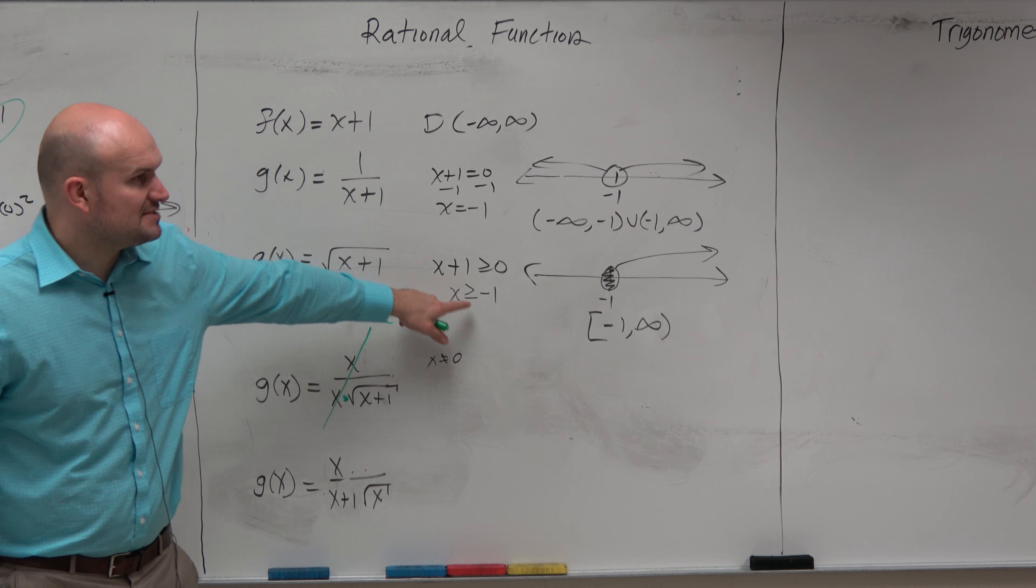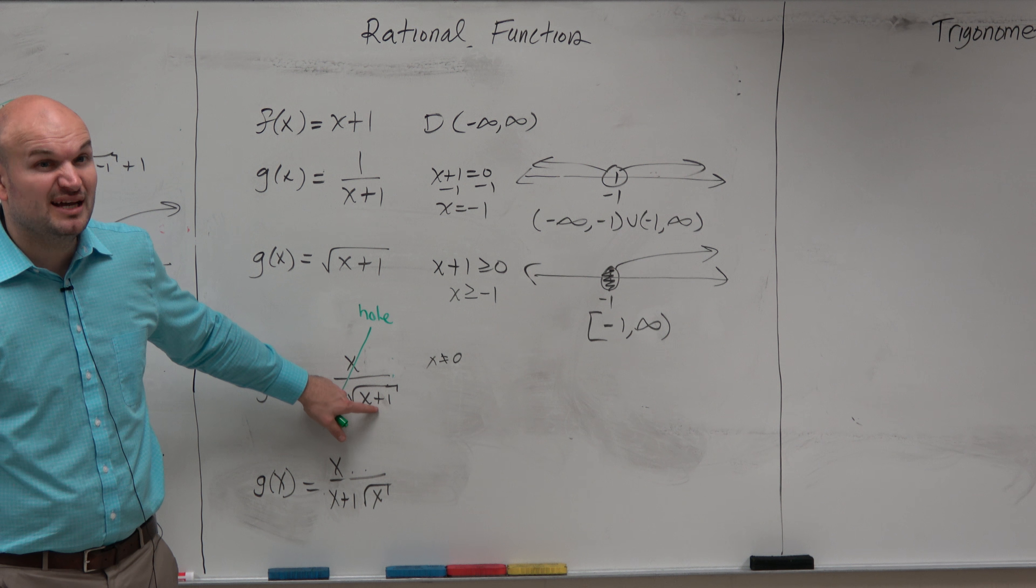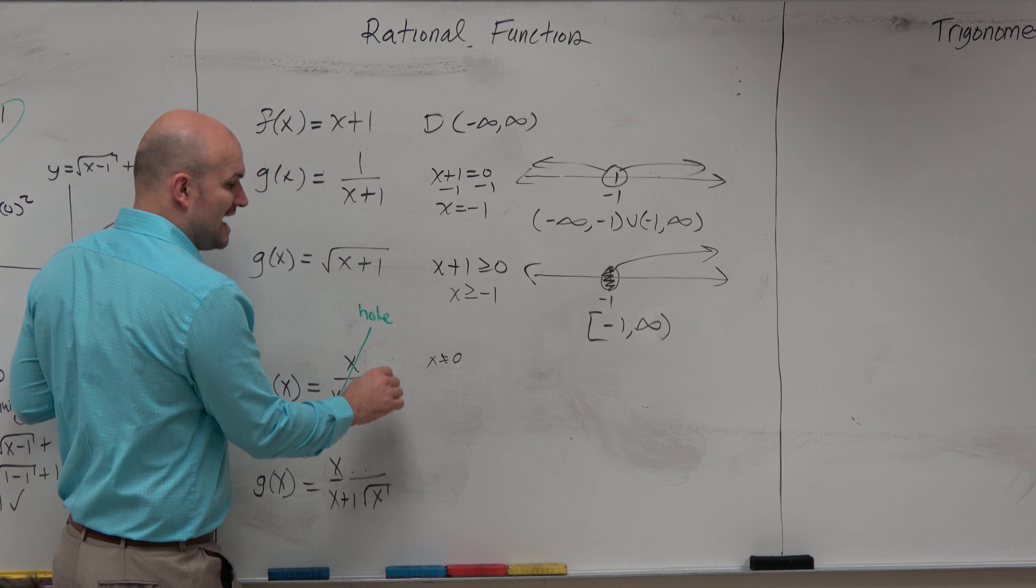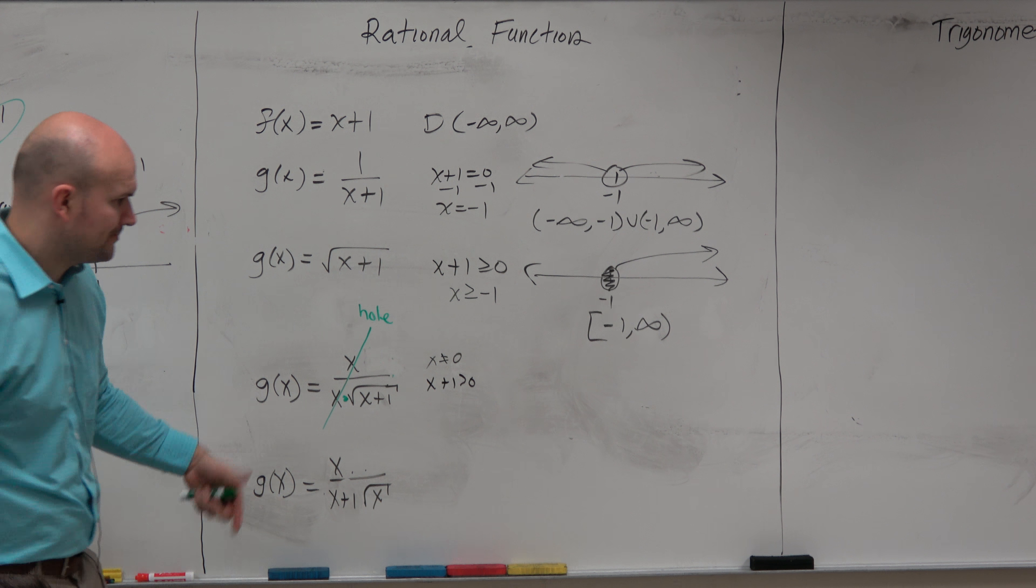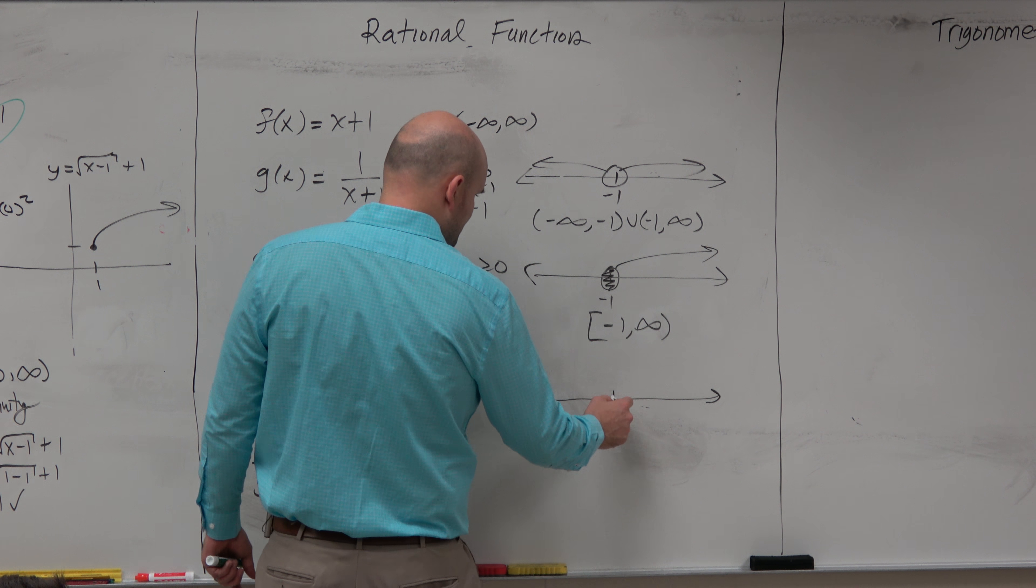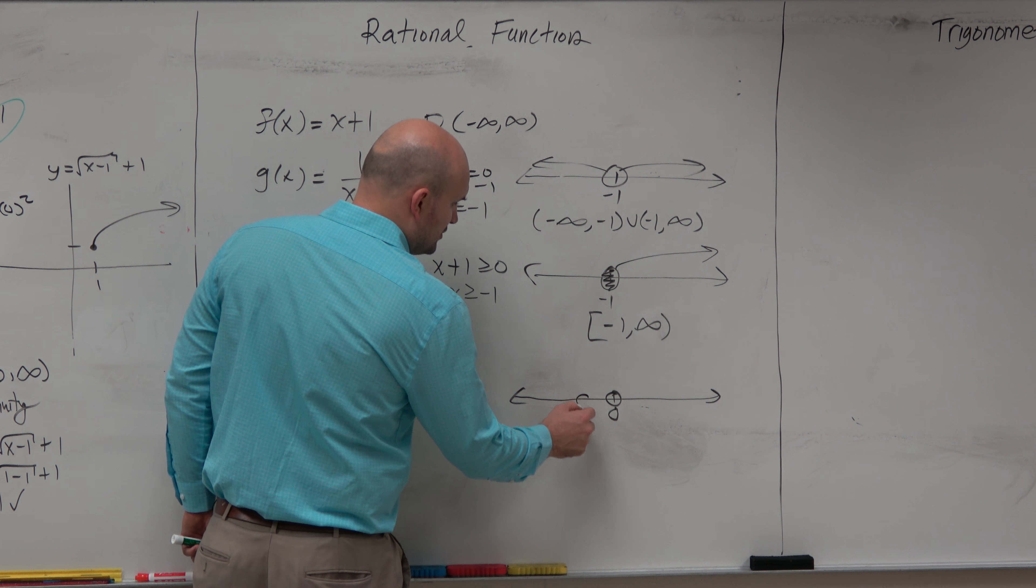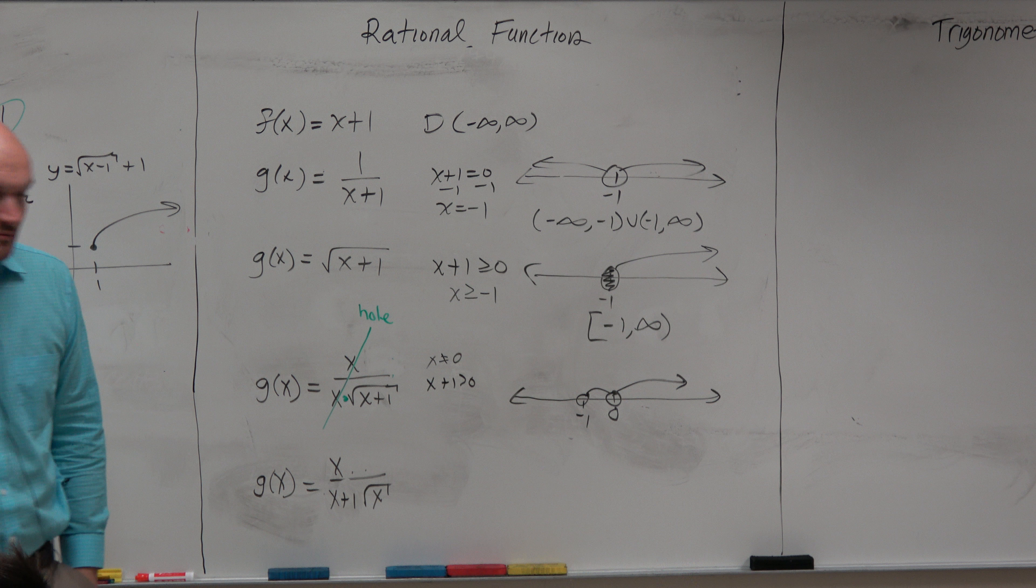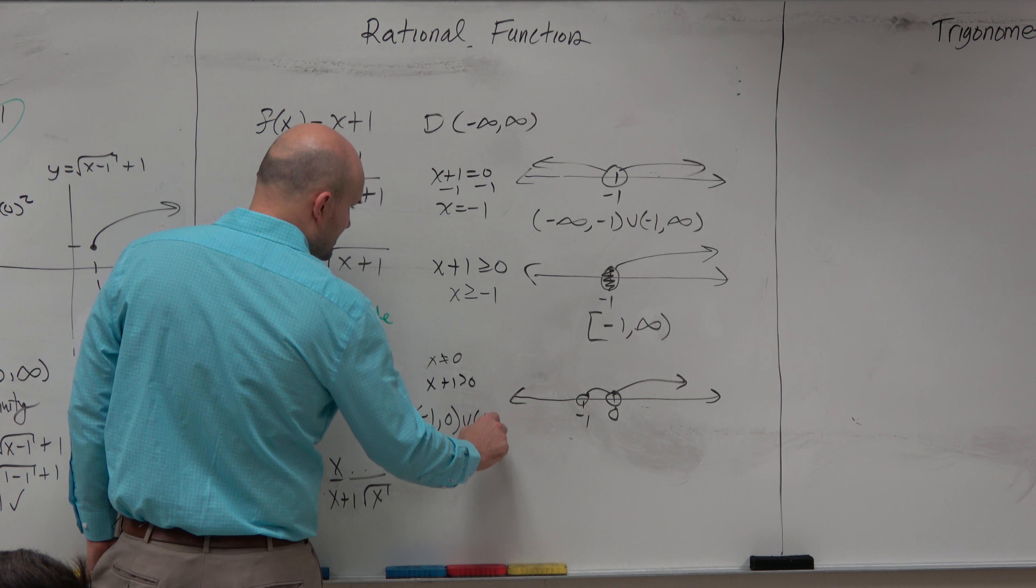And then here, x has to be greater than or equal to negative 1. But what happens when it's negative 1? It's 0, and then that makes the denominator 0, right? So remember, when you have a radical in the denominator, you just set that radicand greater than 0, not equal to, because we don't want it to be equal to. So let's go and look at this number line. We can't have 0. We can't have 0. That is undefined. And then we have all values that are greater than negative 1, but not equal to negative 1. So our domain would look like that. So if I needed to write the domain for that, I would write it as negative 1 to 0 union 0 to infinity.